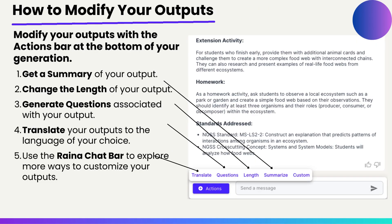You can actually take a look at your summary and choose to modify it. You can get the summary of your output, change the length of your output, generate questions associated with your output, and even translate your output. This is great — if you're trying to create a resource initially in English and want to translate it to Spanish or French, it's a great opportunity to do that. Then you can copy that output and bring it into a Google Doc or Slides and modify and enhance it as you see fit.